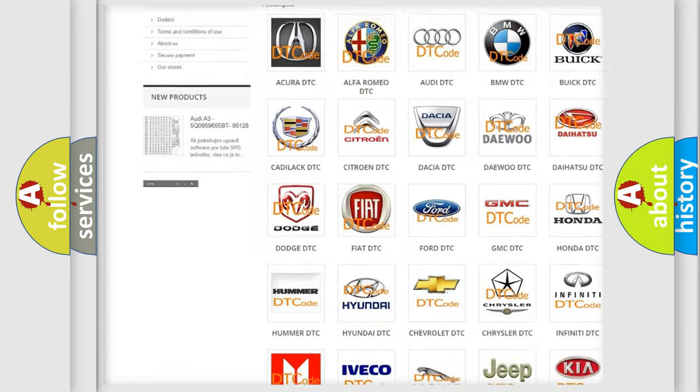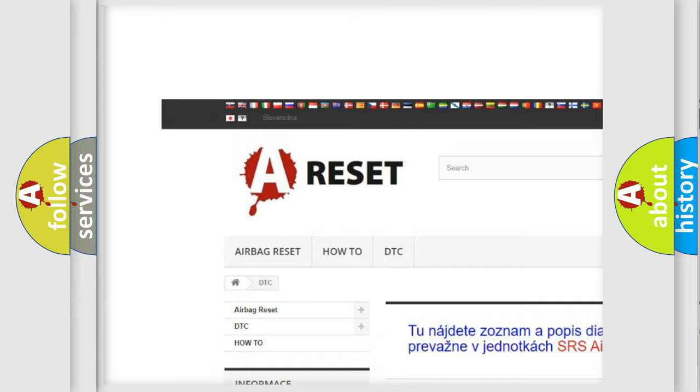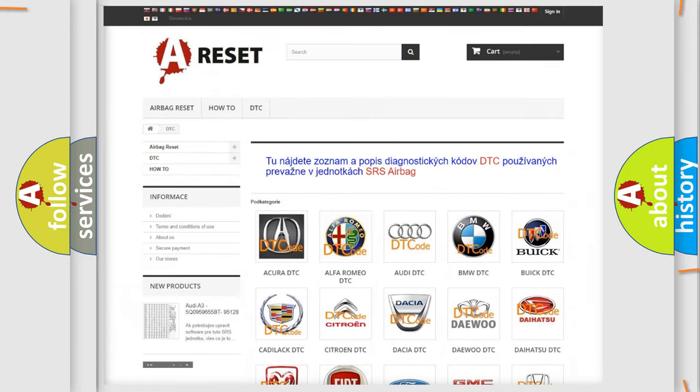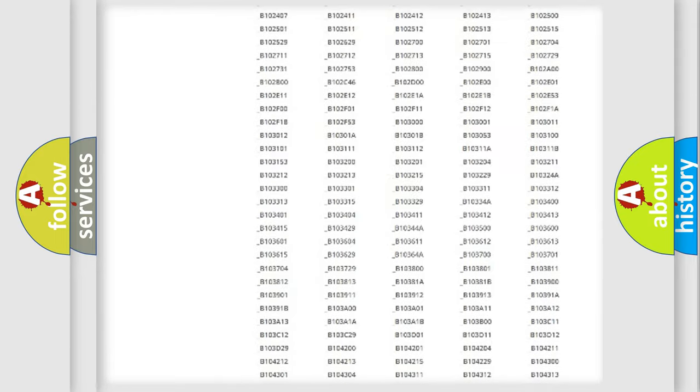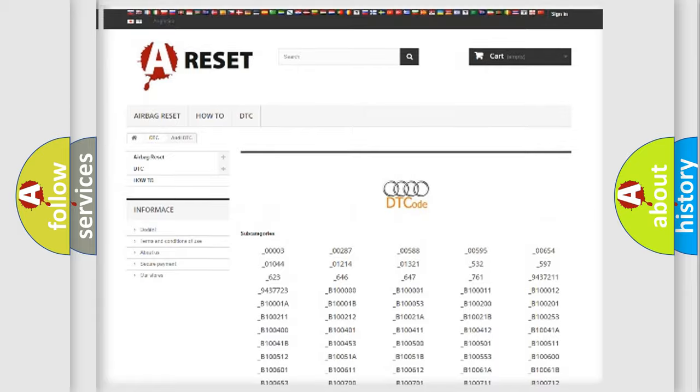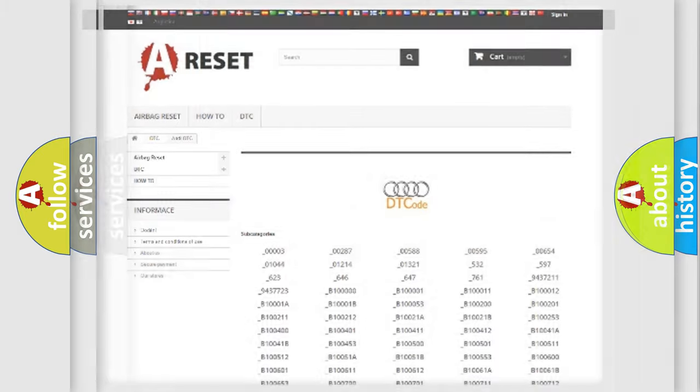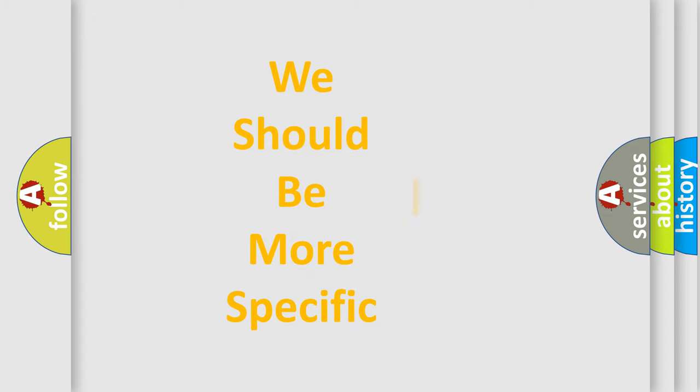Our website airbagreset.sk produces useful videos for you. You do not have to go through the OBD-II protocol anymore to know how to troubleshoot any car breakdown. You will find all the diagnostic codes that can be diagnosed in a car, Audi vehicles, and also many other useful things. The following demonstration will help you look into the world of software for car control units.